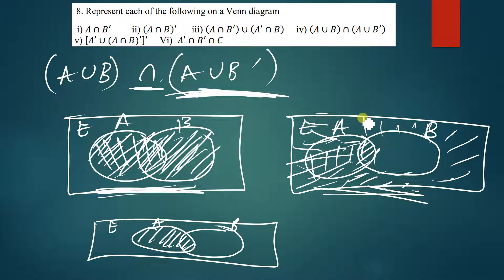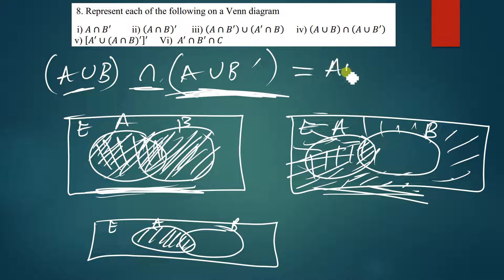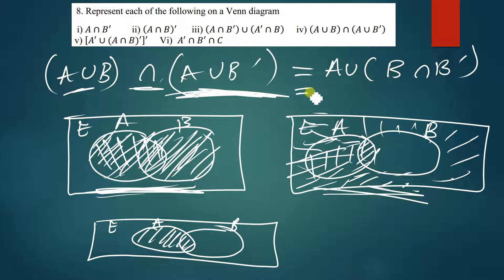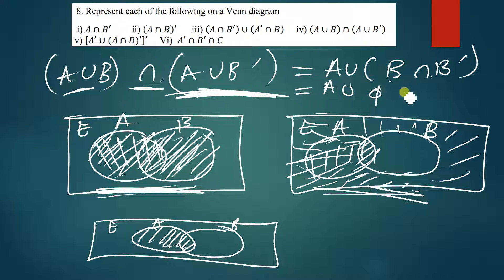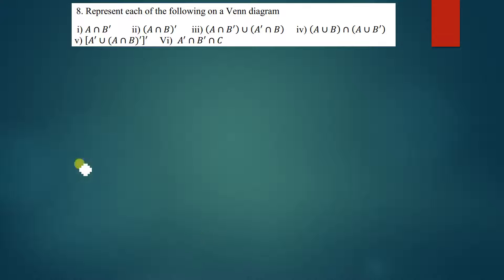You can also simplify this algebraically — when you factor out A union, you have A union (B intersection B complement). B intersection B complement is simply an empty set, and A union empty set is simply just A. This is the solution — that's why we are just shading A.